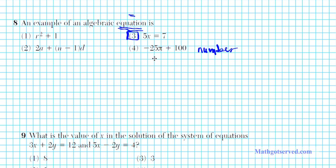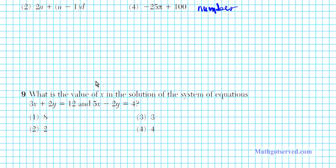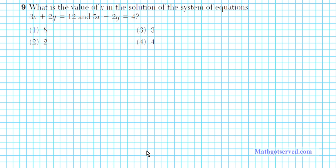Alright let's move on to the next question. Question number nine. Question nine says what is the value of x in the solution of the system of equations. So note that in this system of equations equation one being 3x plus 2y equals 12 and equation two being 5x minus 2y equals 4, we're asked just for the value of x. We do not have to solve the entire system. We just want to find the value of x.